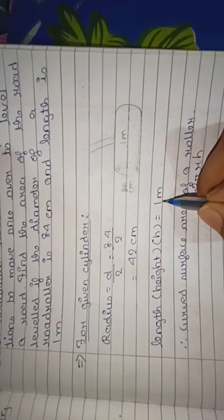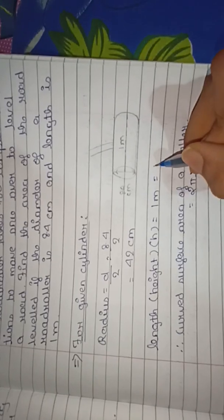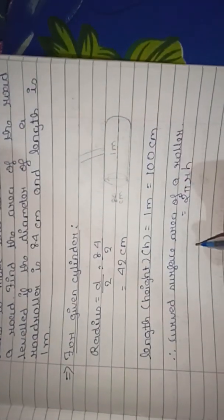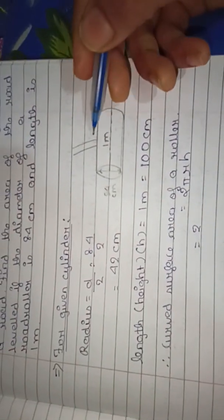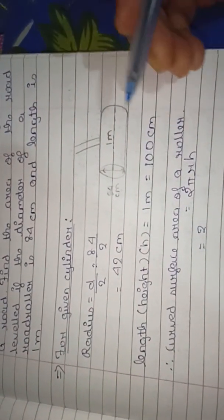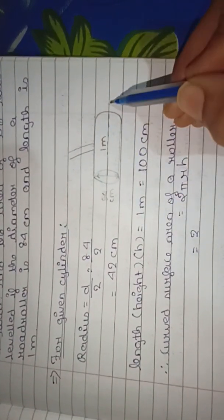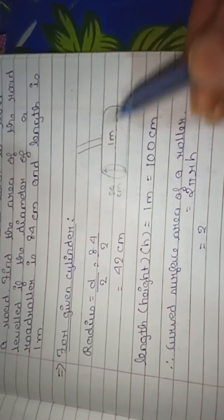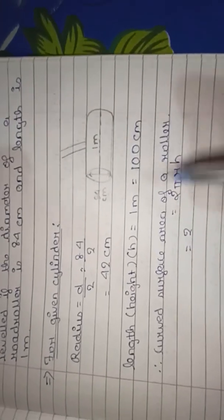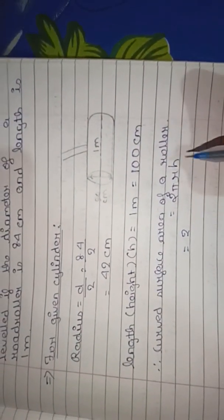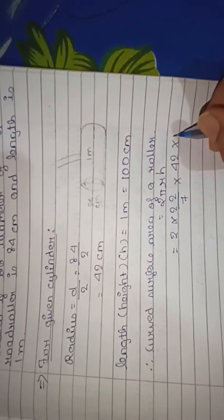Length is given as 1 meter, which we convert to 100 centimeters so all measurements are in the same unit. The curved surface area formula is 2πrh. So: 2 × (22/7) × 42 × 100.